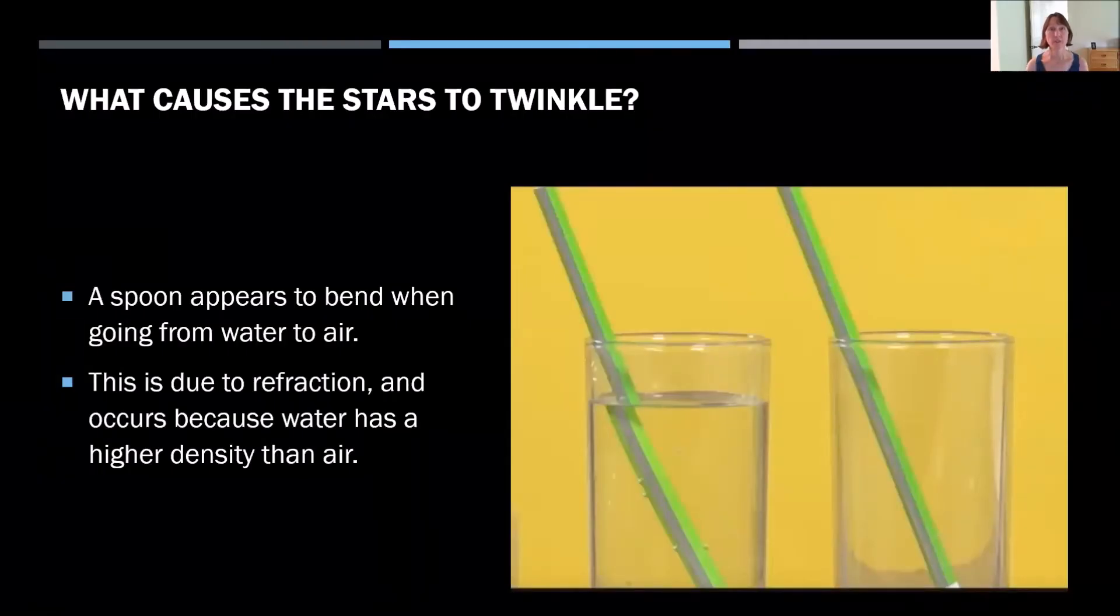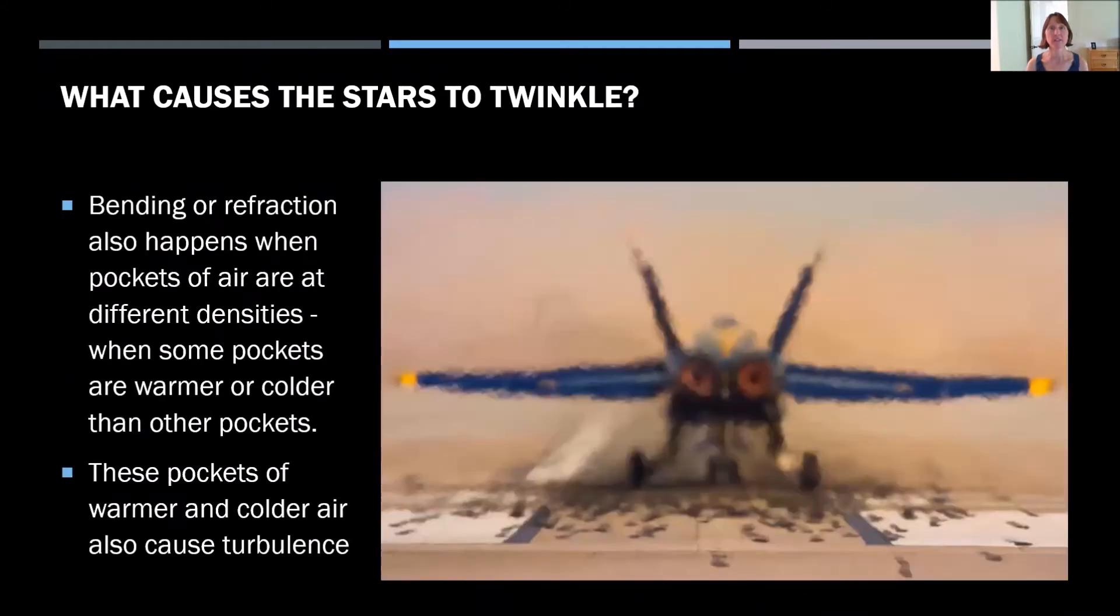So what makes the stars twinkle? It's the same reason why spoons appear to bend when they go from water to air in a glass. It's because the different densities between water and air cause the light waves to be refracted. This can also occur when the densities are different because there's pockets of warm air versus cold air. This can also be called turbulence, and we've all seen it when we've been driving down a hot road and the images in the distance appear to waver.